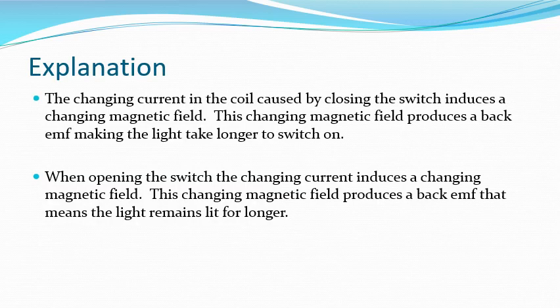Here's our explanation. When we close the switch we get a changing current — it goes from no current to a large current — and this induces a changing magnetic field in the inductor. This changing magnetic field produces what we call a back EMF, which opposes the initial EMF, and so it takes slightly longer for the current to switch on. If we look at opening the switch, we have the opposite situation: we go from a large current to a very small current, producing a large rate of change of current which induces a changing magnetic field, producing a back EMF, meaning the light stays on for a little bit longer.